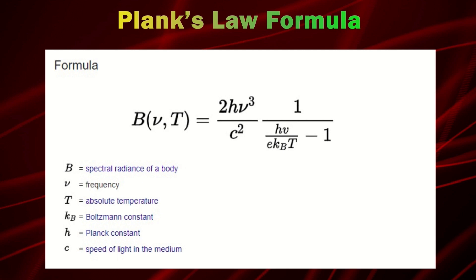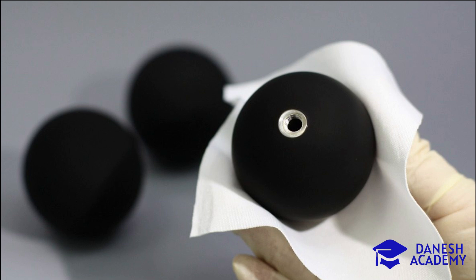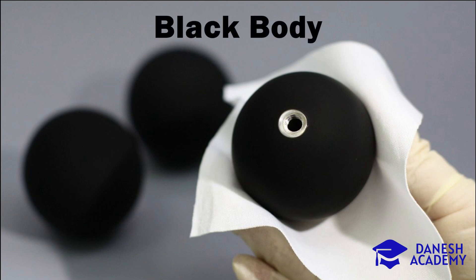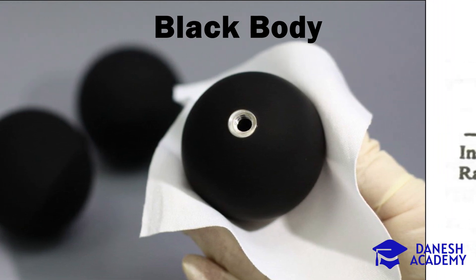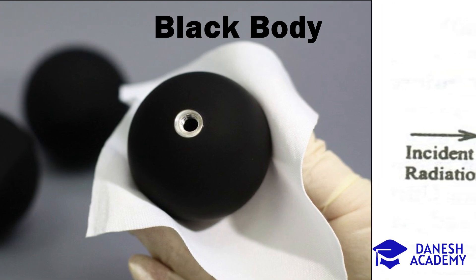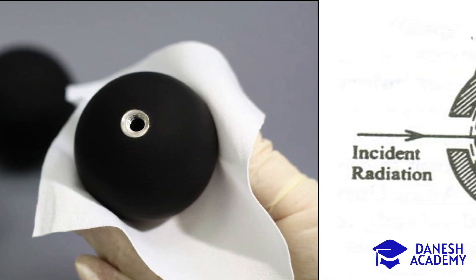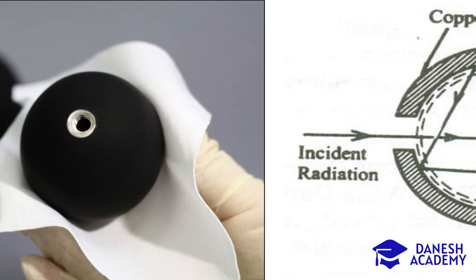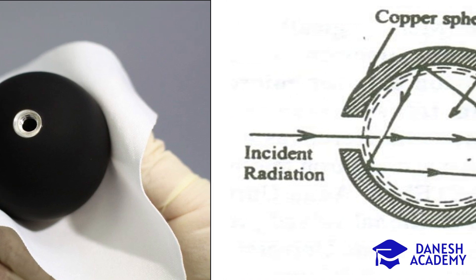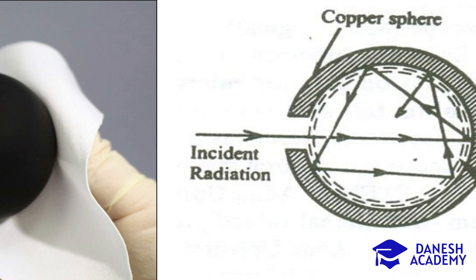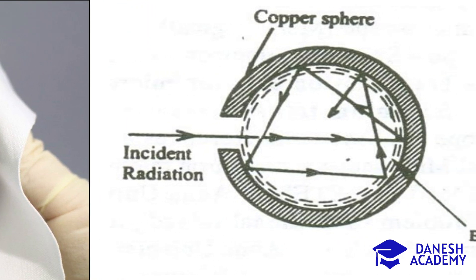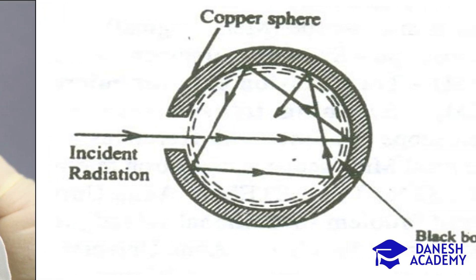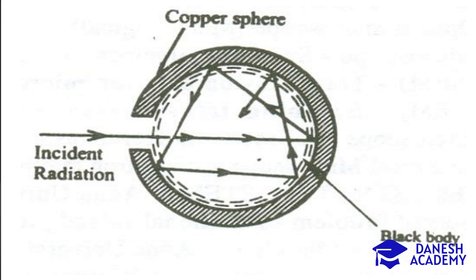In physics, a black body is an object that absorbs all the light that shines on it — no electromagnetic radiation is reflected or transmitted. A good example of a black body is a hollow body with a small hole, through which radiation entering has very little chance of being reflected. This radiation is continuously reflected off the internal walls until it is finally absorbed, so if we look into the object through the hole, we will see it is black. When the black body gets hot, it emits electromagnetic waves. The spectrum of this radiation — the relative intensity of different wavelengths — depends only on the temperature of the black body. This rule is the main basis of thermal imaging.